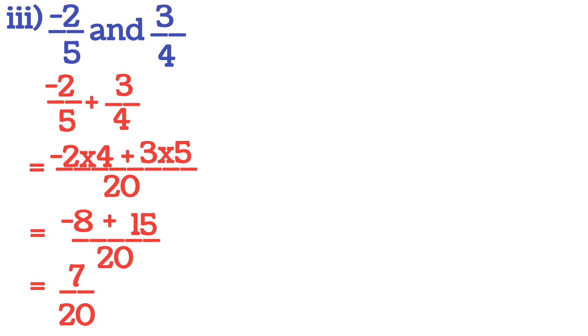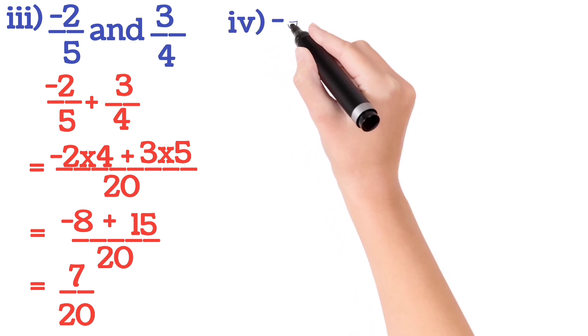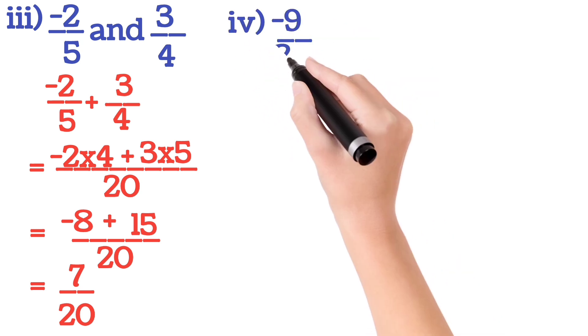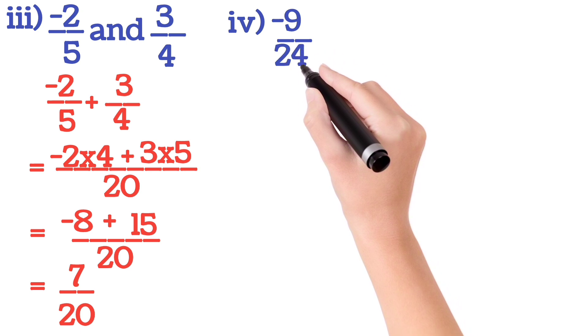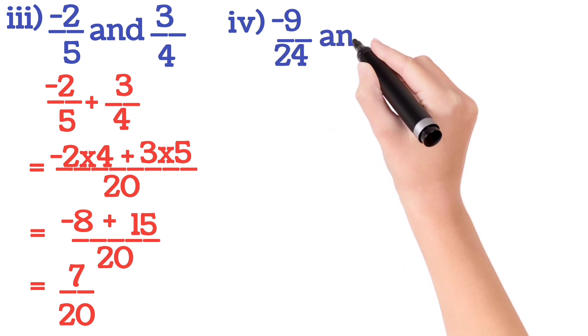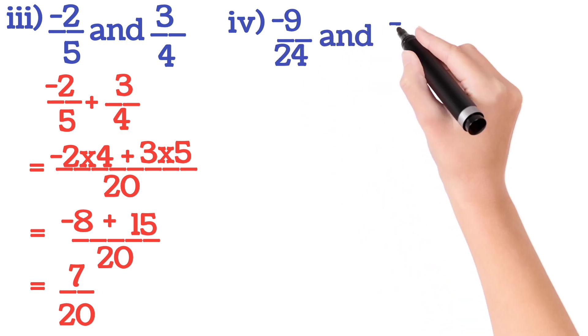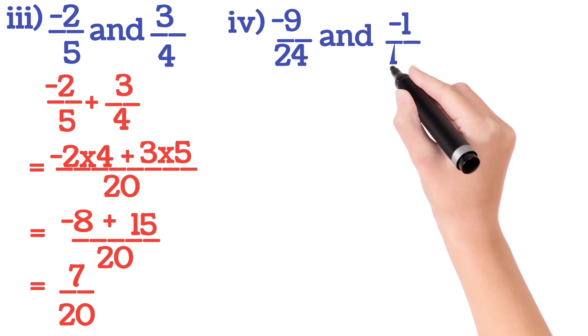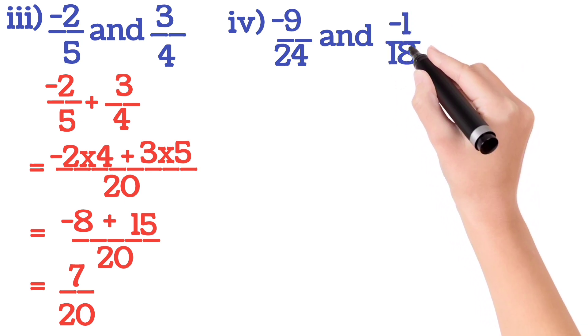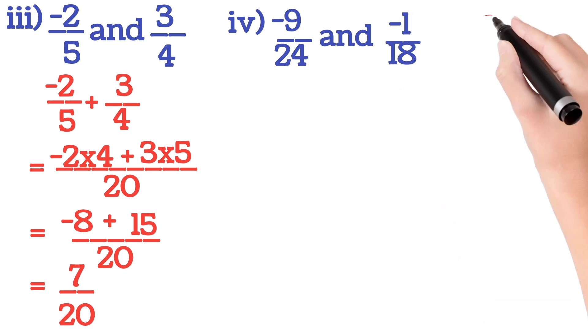Now next sum number 4. This one is you will add minus 9 by 24 and minus 1 by 18. First we will find out the LCM of 24 and 18. Let us find the LCM.